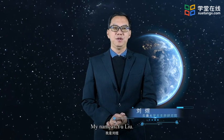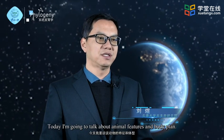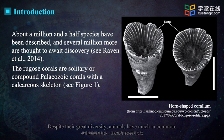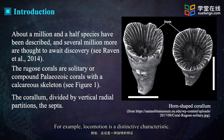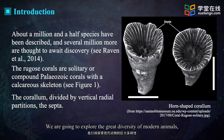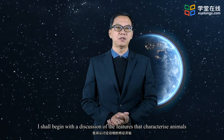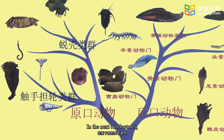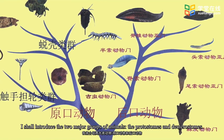Hello everyone, my name is Yu Liu. I'm from the YKLP of Yunai University. Today I'm going to talk about animal features and body plan. Animals bewilder us with their diversity of form and function. Despite their great diversity, animals have much in common. For example, locomotion is a distinctive characteristic. We're going to explore the great diversity of modern animals, which is the result of a long evolutionary history. I shall begin with a discussion of the features that characterize animals and review the phyla at the base of the animal phylogeny. In the next two lectures, I shall introduce the two major groups of animals, the protostomes and deuterostomes.